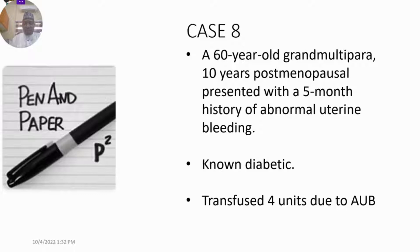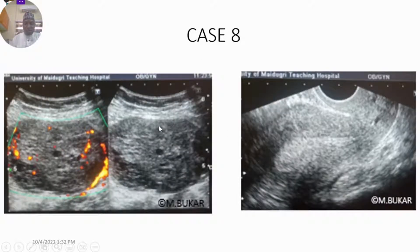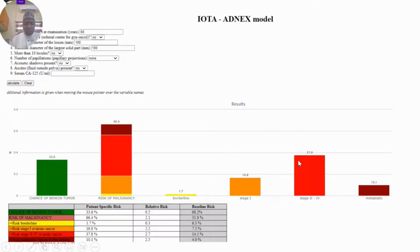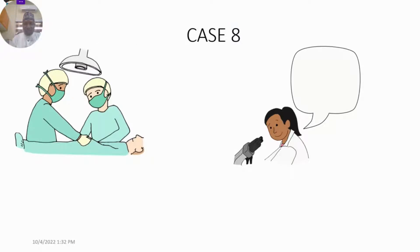Case 8 was a 60-year-old grand multipara who was 10 years post-menopausal, presenting with a 5-month history of abnormal uterine bleeding. She required transfusion of 4 units because of the bleeding. The clinical assessment suggested a granulosa cell tumor, especially with disappearance of the endometrium at age 60. We inputted all information and the risk was highest for stage 2 to 4 disease, though clinically it was stage 1 disease. Histopathology confirmed adult granular cell tumor.